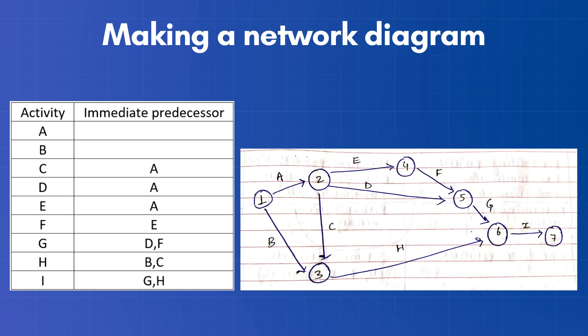Now if we look in the table, here activity E is the predecessor of activity F. So let's define activity F just after activity E.